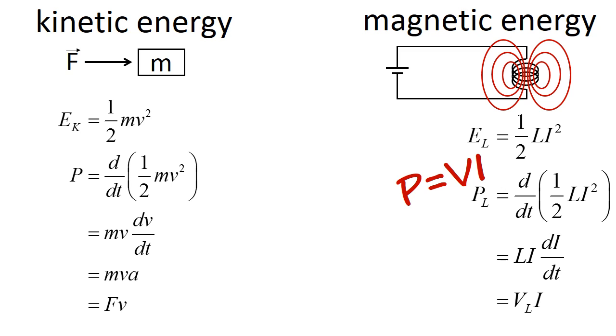Looking at these two systems together, we see that both of them have energy of motion. In the mechanical system, the mass has kinetic energy due to its velocity. For the electrical system, the inductor has magnetic energy due to the motion of the charges.